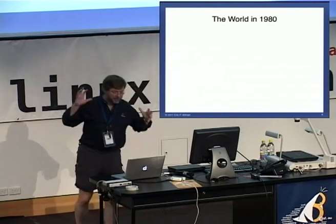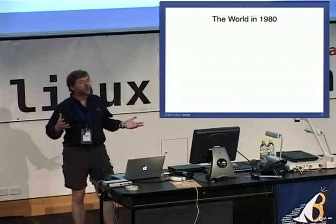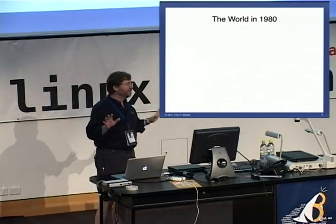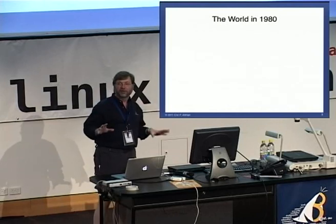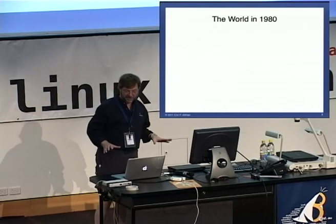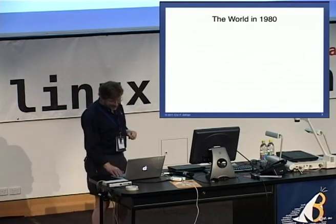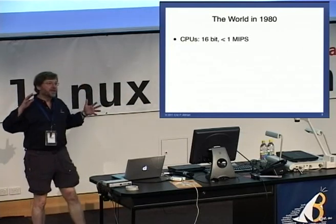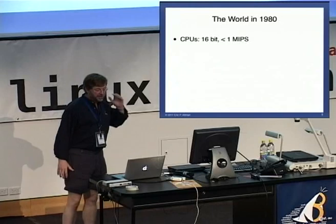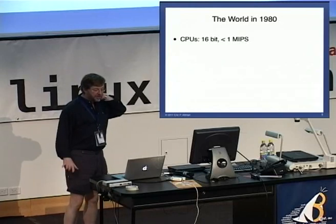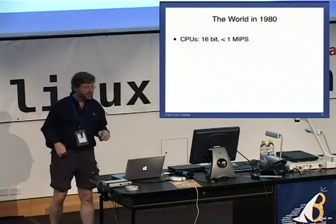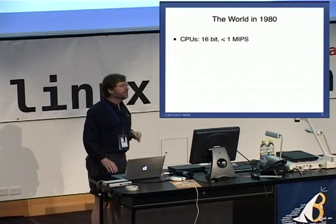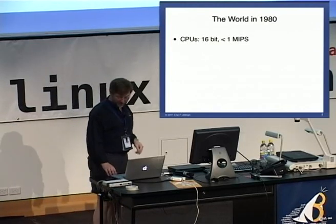So let me try and give you an idea of what the world was like in 1980. I'm guessing that a lot of you were not in the prime of your career in 1980. CPUs — a commodity CPU — was a 16-bit machine. Those are actually kind of the high-end ones. The low-end ones were 8 bits. They were substantially less than one MIPS — million instructions per second.